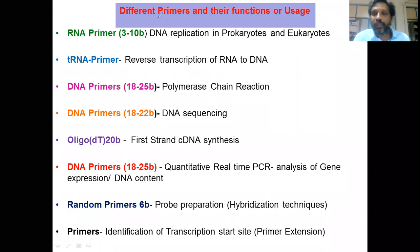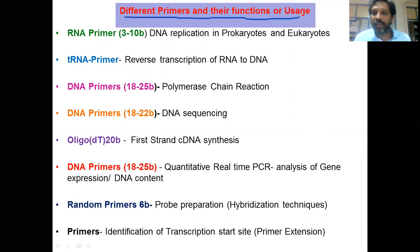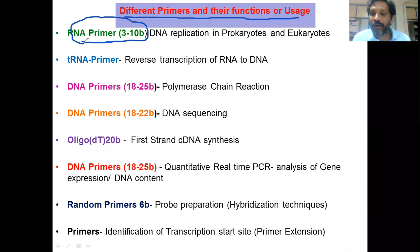Here we see different primers and their functions and usage in molecular biology and rDNA technology. The first type is the RNA primer. This primer is required for the initiation of DNA replication in both prokaryotes and eukaryotes, and its length is 3 to 10 bases.